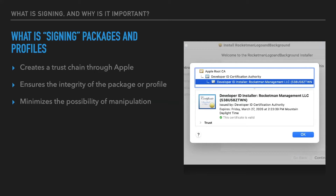This is particularly relevant for something like a pre-stage enrollment — a three-way handshake where Apple has a hand in it. A DEP machine first gets started up and calls out to Apple saying 'who am I?' Apple responds, sends it back to the organization, and ultimately back to the local machine. Because Apple has a hand in that, it wants to see that the pre-stage enrollment package is signed.